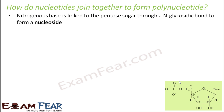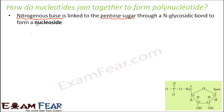Now the nitrogenous base which we spoke about — they can be purines or pyrimidines. These nitrogenous bases are linked to the pentose sugar through an N-glycosidic bond to form a nucleoside.